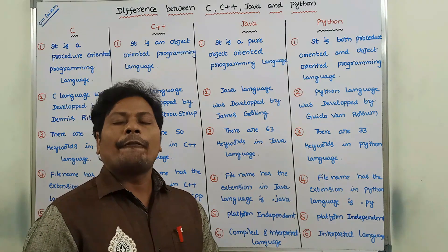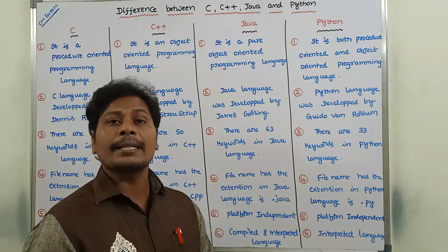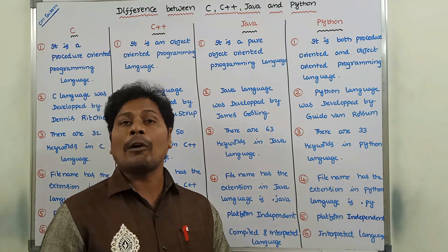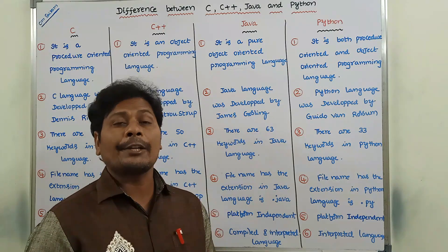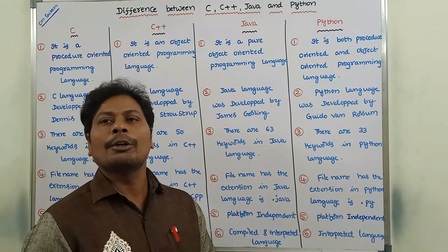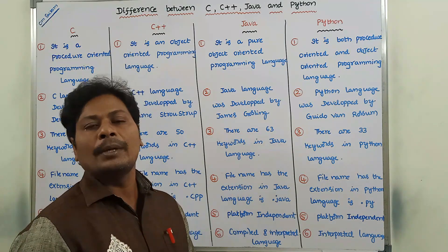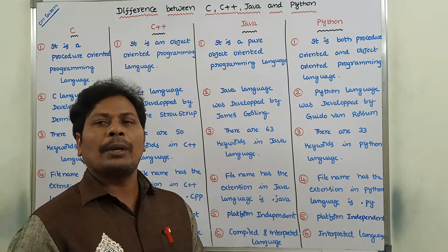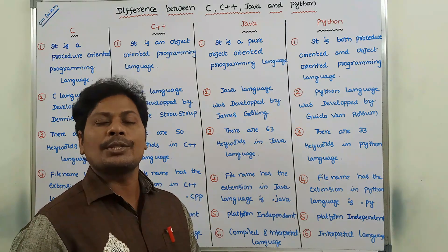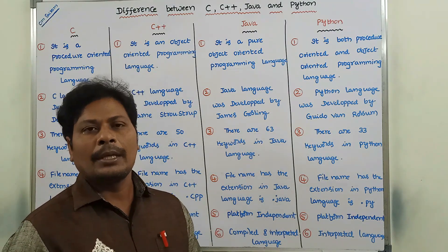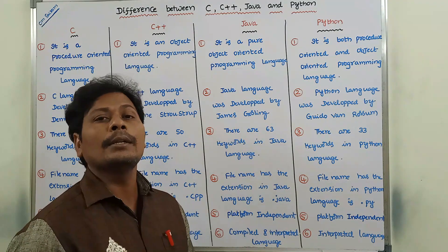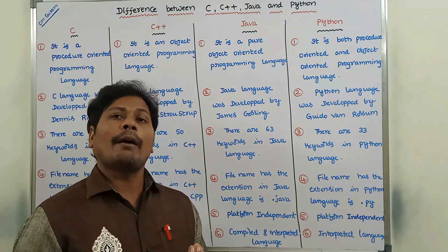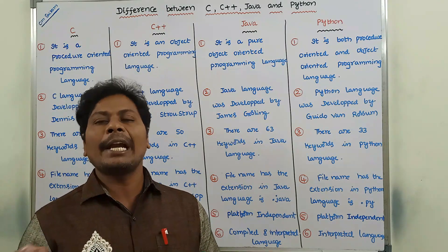C language is platform dependent. C++ language is also platform dependent. Java language is platform independent, and Python language is also platform independent. Platform independent means that a program created on one platform can also run on all other platforms. For example, a Java program created on Windows operating system can also run on Linux operating system. So Java is independent of the operating system — hence Java language is a platform independent language.